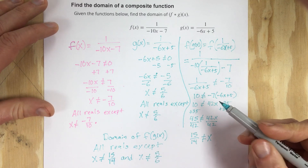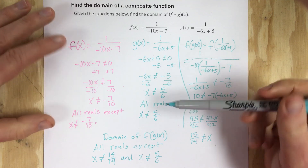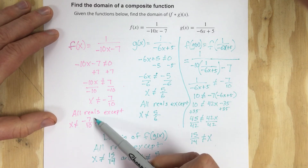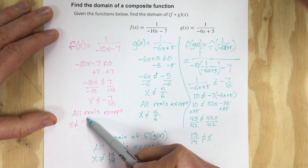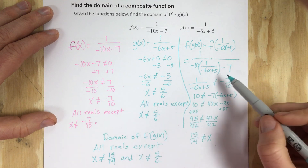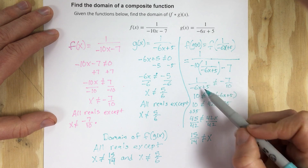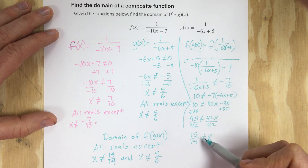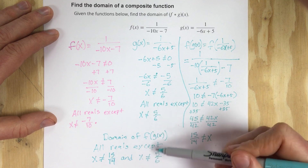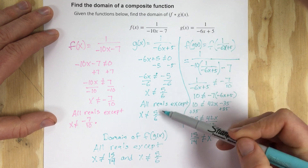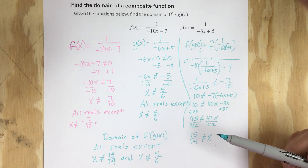Basically, when working through this type of problem on your own: find the original domains for f and g individually. Use the domain restriction for f — the outside function — along with g plugged into f of g of x, to find the additional domain restriction. Then include g's own domain restriction in your final answer, because you can't plug in 5 sixths without dividing by 0.